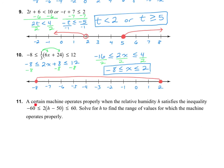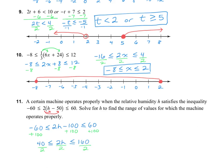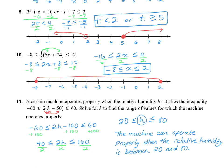Let's read number 11. A certain machine operates properly when the relative humidity H satisfies a given inequality. We need to solve for H to find the range of values for which the machine operates properly. First, distribute the 2, then add 100 to all parts of the compound inequality, then divide by 2 on all parts. The result means the relative humidity needs to be between 20 and 80, including 20 and 80, for the machine to operate properly. Okay, that's it — thanks for watching.